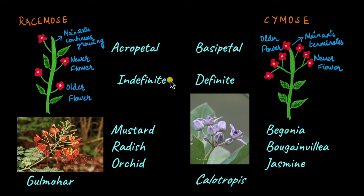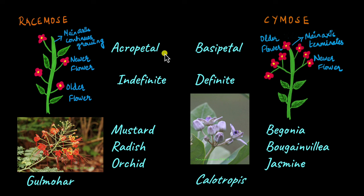So the next time you see a flowering plant, try to figure out its inflorescence — check if it is racymose or cymose. Now we have quite a lot of confusing terms: racymose, basipetal, cymose, acropetal. How do you remember which is which? I'd like to use something called word associations to remember these terms. This works for me and you can come up with your own word associations. Let's take a look at each one.